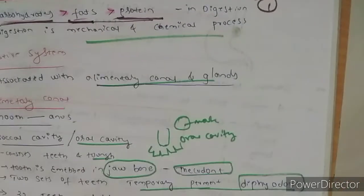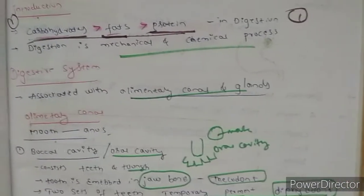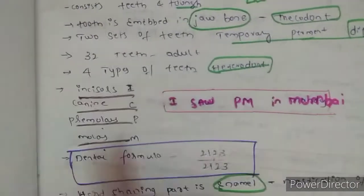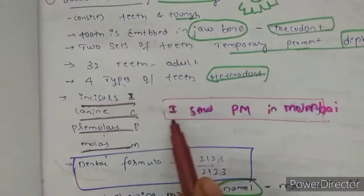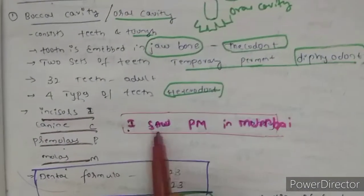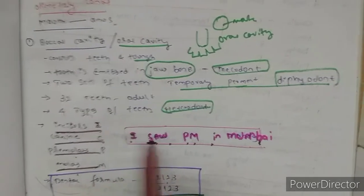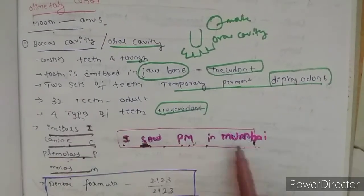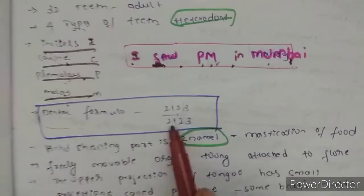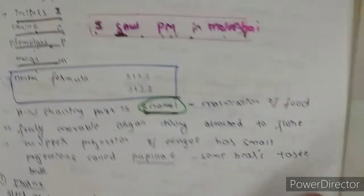Next, these notes will be available in Facebook page. That link will be given in description box. People will get confusion in remembering the incisors, canine, premolar, molar of teeth. So you can remember this entire in one sentence serially: 'I saw PM in Mumbai.' I is incisors, SA means canine, PM means premolar, M means molar. So you can know dental formula also. The hard chewing part - these notes will be available. You can read it easily.